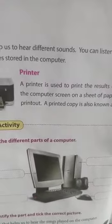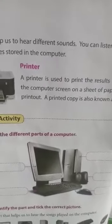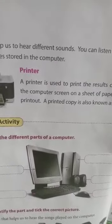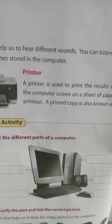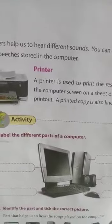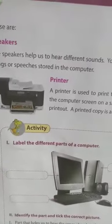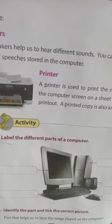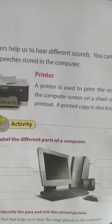So these are the four main parts of the computer: monitor, CPU, keyboard, and mouse. The other parts of the computer are speakers and printers. Thank you very much.